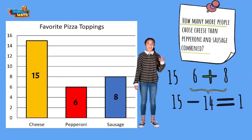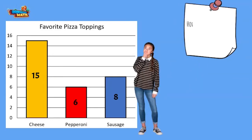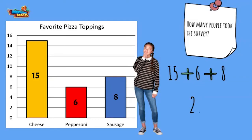Last question: how many people took the survey? The question wants to know how many total people made a choice. I can add up each bar to find the total number of votes: 15 plus 6 plus 8 equals 29.